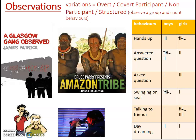The last type of observation is structured observation, sometimes called systematic observation. This is when you observe a group and count certain behaviours — it can be overt or covert. For example, sitting in the back of the classroom and counting differences in behaviour between boys and girls: which is more pro-school or anti-school? You tally those behaviours and then analyse the data to draw conclusions, such as boys showing more anti-school behaviour. This is how you collect quantitative data from observation, whereas the other methods collect qualitative data.